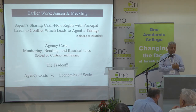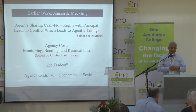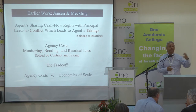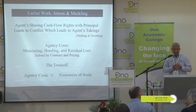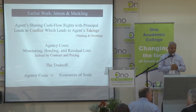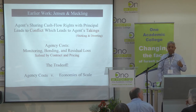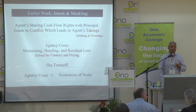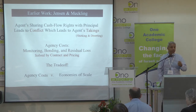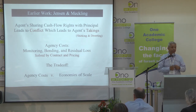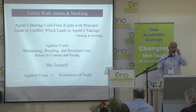In their model, once you divide cash flow rights, agents sharing cash flow rights with the principal leads to conflict, which leads to agent takings — either diverting or shirking, what we call self-dealing or mismanagement. The agency cost in this story is monitoring, bonding, and residual loss. Monitoring in their model, because there are no control rights, is just about enforcing a contract — suing the agent who committed not to buy a private jet and then did. All of this was solved through contract and pricing.